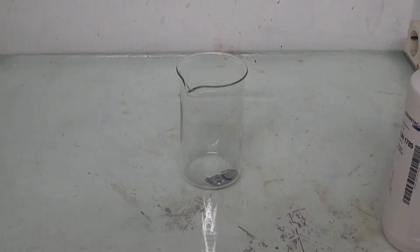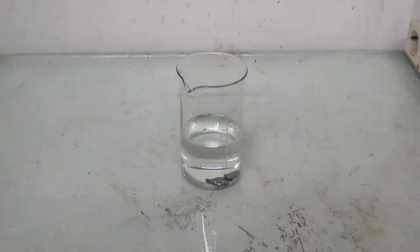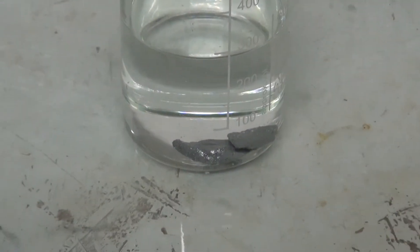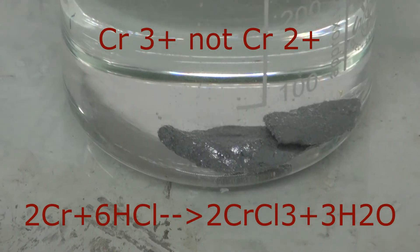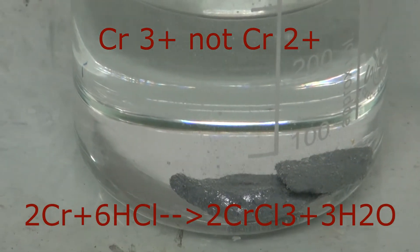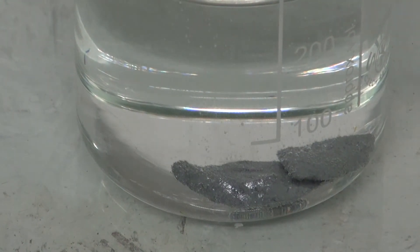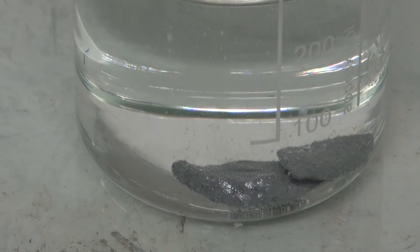To this I then added 300 milliliters of 30% hydrochloric acid. The hydrochloric acid will attack the chromium metal and form chromium 2 chloride and hydrogen. Chromium metal is pretty corrosion resistant so this will take a while.